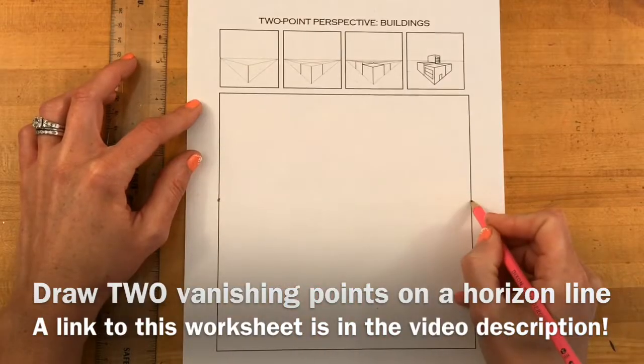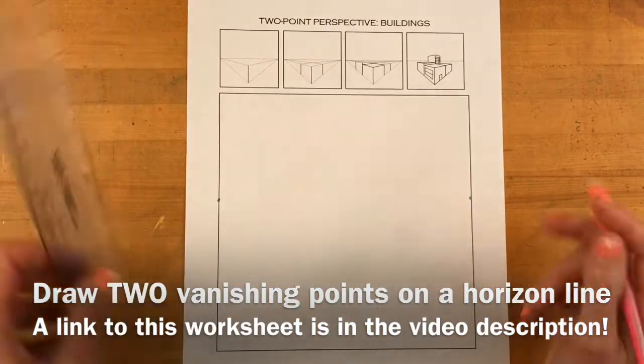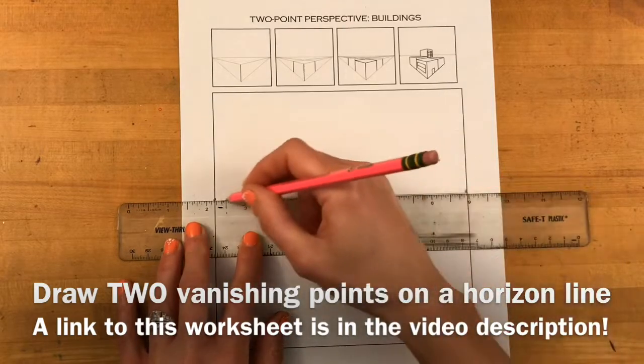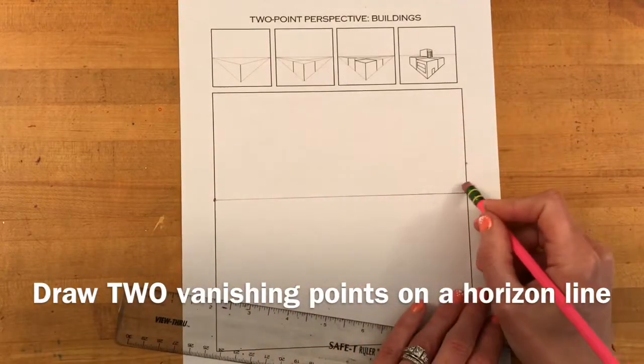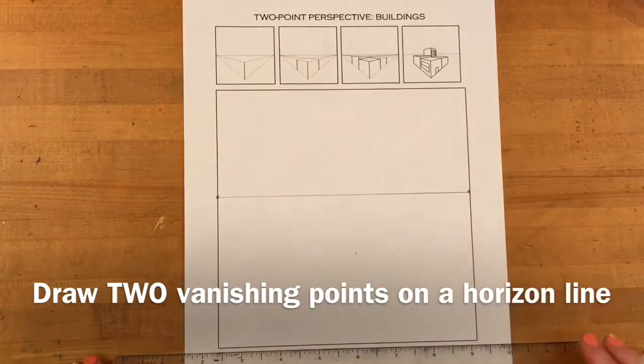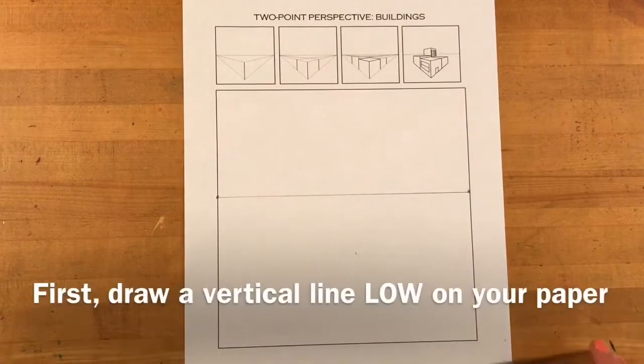Now when you're ready to start drawing buildings on your building worksheet, begin by drawing two vanishing points on a horizon line. The horizon line should be parallel to the top and bottom of your paper and I would place the vanishing points on the outside left and right edges.